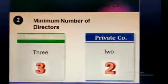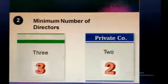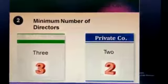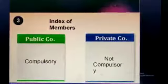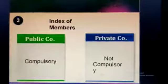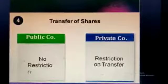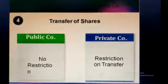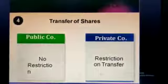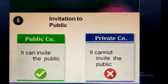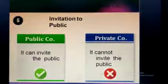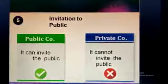On the basis of minimum number of directors, a public company must have at least 3 directors, but a private company must have at least 2 directors. Third is index of members — it is compulsory to maintain an index of members in a public company, but not compulsory in a private company. Fourth, regarding transfer of shares, there is no restriction on transfer of shares in a public company, but there is a restriction in a private company. Fifth, regarding invitation to public, a public company can invite the public to subscribe to its shares, but a private company cannot.